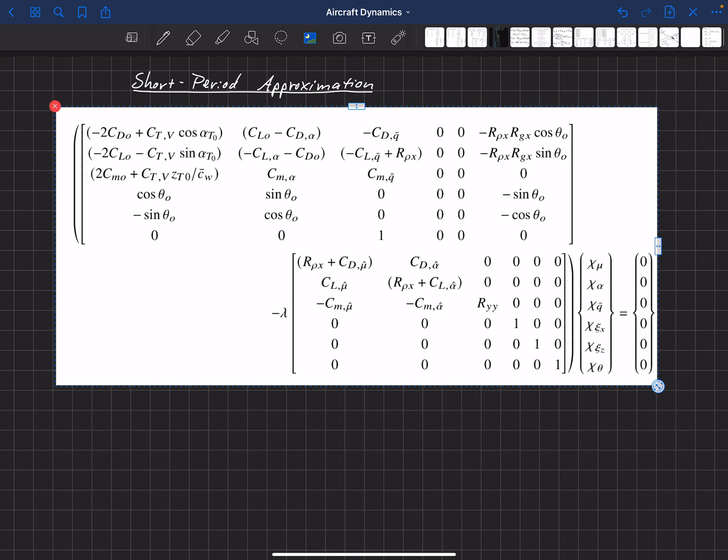So I've just copied in here the eigenproblem, the longitudinal eigenproblem in its general form. And the short period mode, as we found previously, is dominated by changes in alpha and q and also in z and theta. So we have a rapid change in angle of attack and our pitch rate, as well as we can have a rapid change in altitude and also our elevation angle theta. So what we can do though,